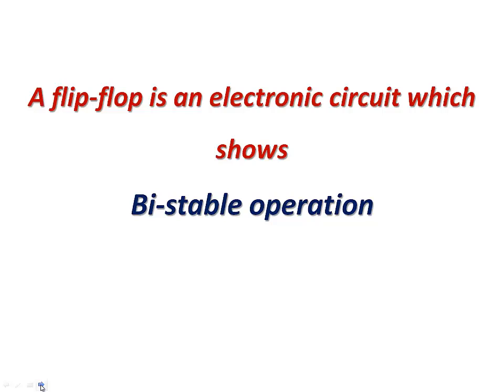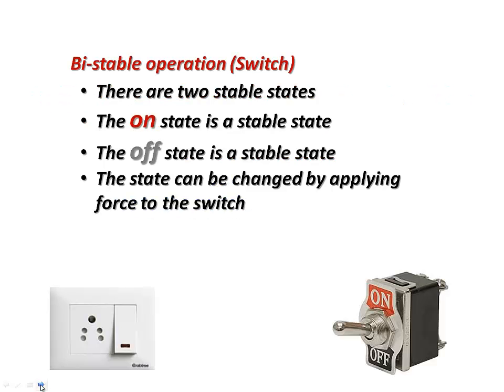So functionally a flip-flop is an electronic circuit which shows bistable operation. Let us take an example of a switch we use in our home to switch on and switch off the fans or lights. These switches show bistable operation. It has got two stable states, one is the on state, the other is the off state.